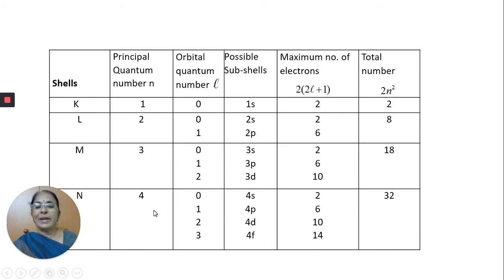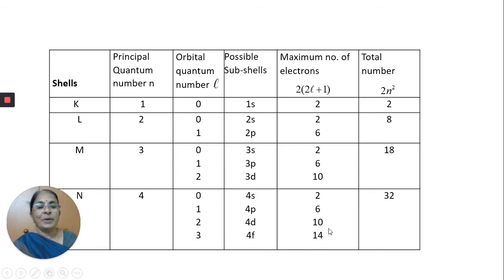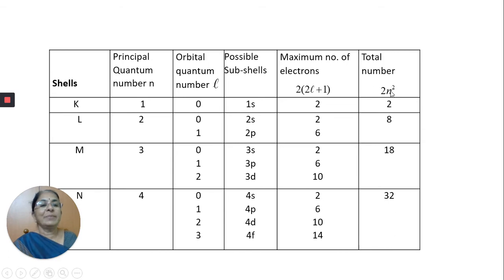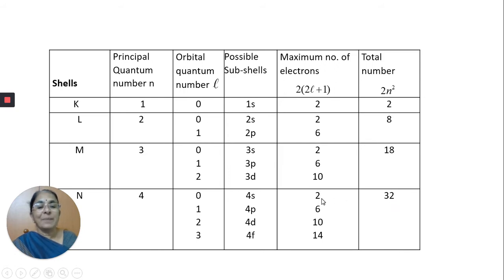Next, we discuss the spin angular momentum quantum number. The angular momentum arising due to the spin motion is called spin angular momentum, and the quantum number associated with it is called the spin angular momentum quantum number. Spin can have only two values: clockwise or anticlockwise. The spin angular momentum is given as S·(h/2π), and by quantum mechanics, S is replaced by √(S(S+1)), giving spin angular momentum = √(S(S+1))·(h/2π).